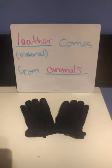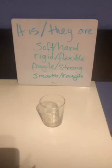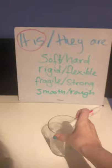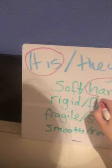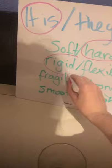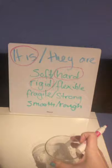Finally, choose the properties that describe your object. Let's look at the glass — it is, or they are? It is, because we have one glass. Is the glass soft or hard? I would say hard. Is it rigid or flexible? Rigid. Is glass fragile or strong? Yes, glass is fragile. And is it smooth or rough? Smooth.